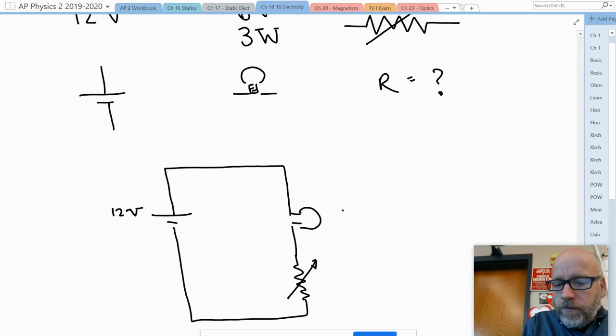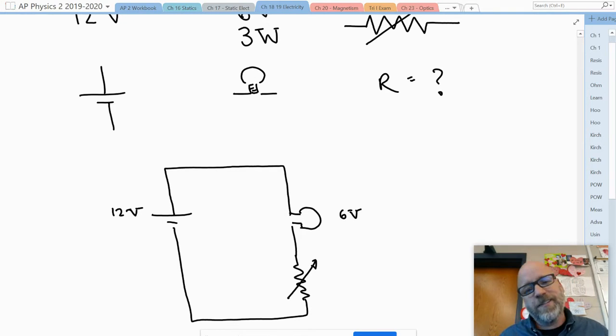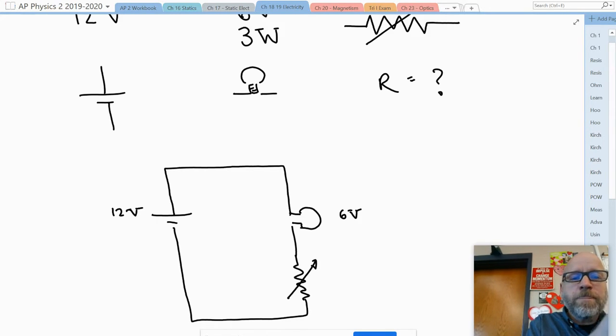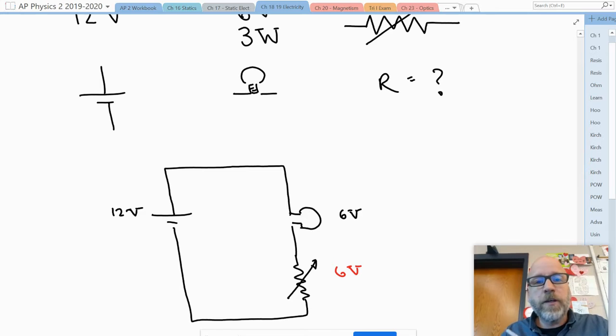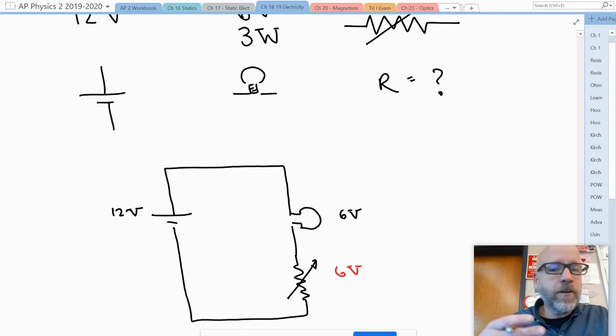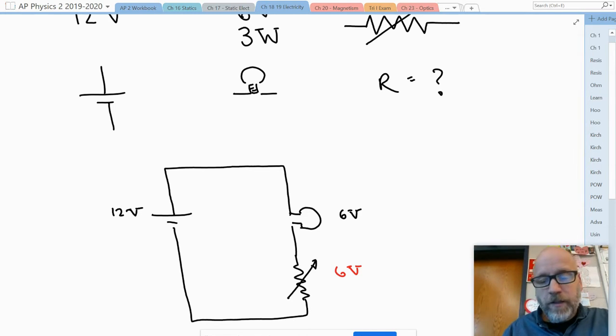Now if I have 12 volts total and six volts through the light bulb, obviously what do I need the voltage drop to be across the resistor? Yeah, that's right, nice job! This needs to be six volts. What you just did without realizing it was you applied Kirchhoff's loop rule that says the sum of the volts around that loop is going to be equal to zero.